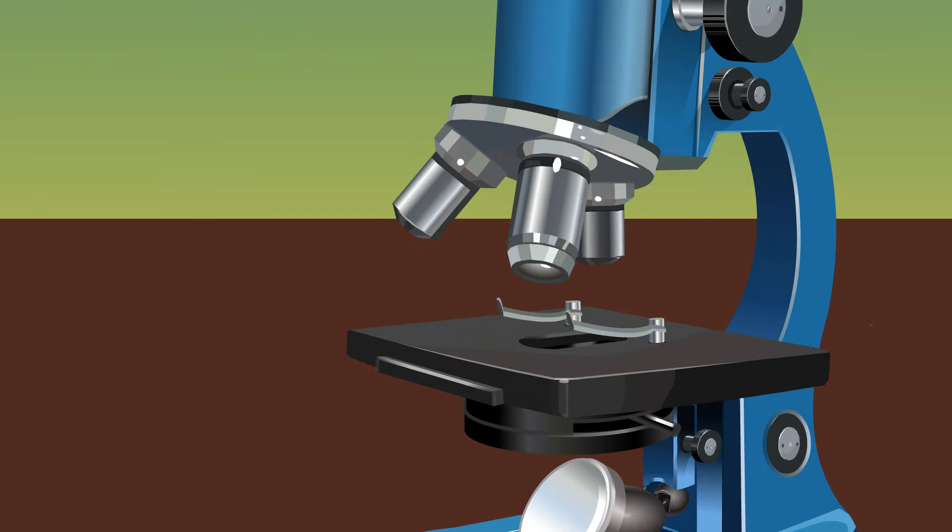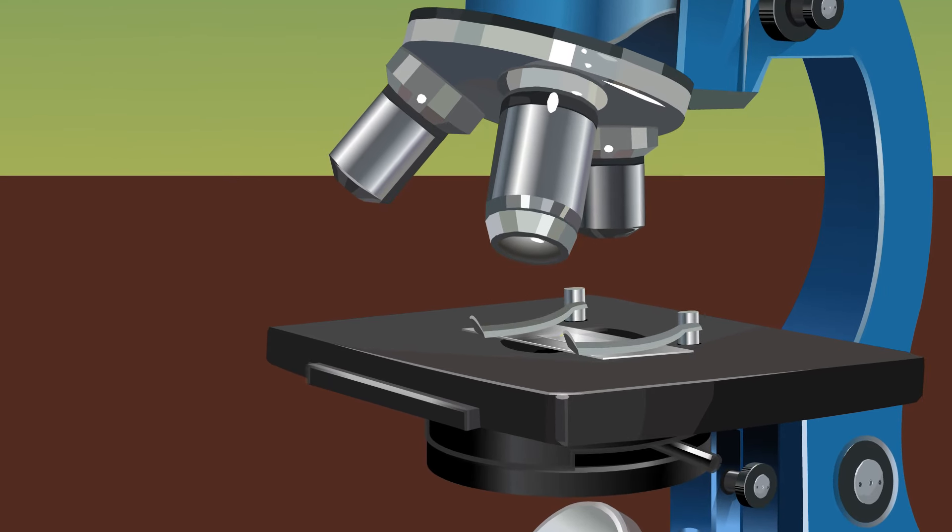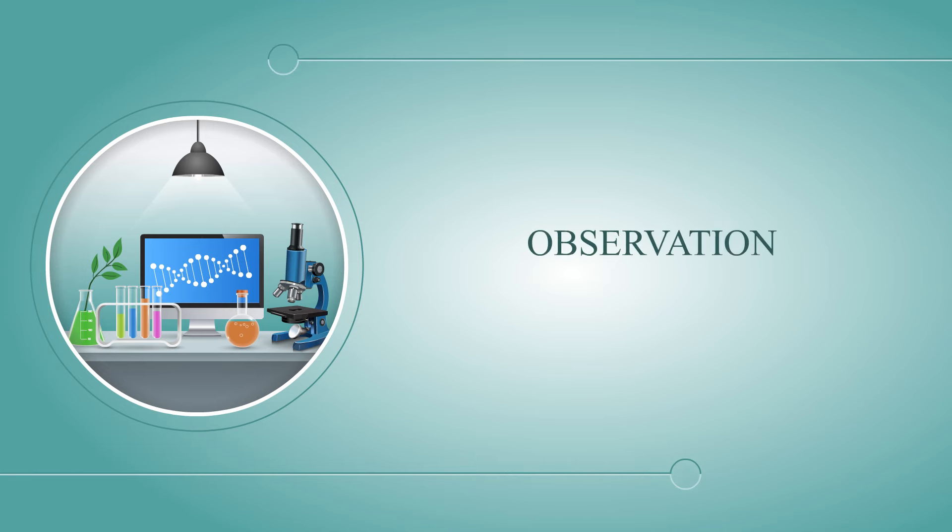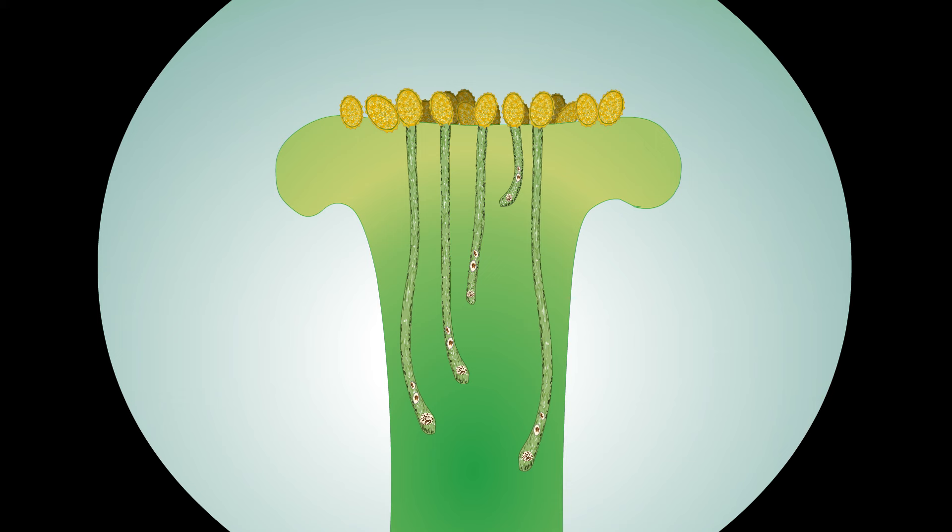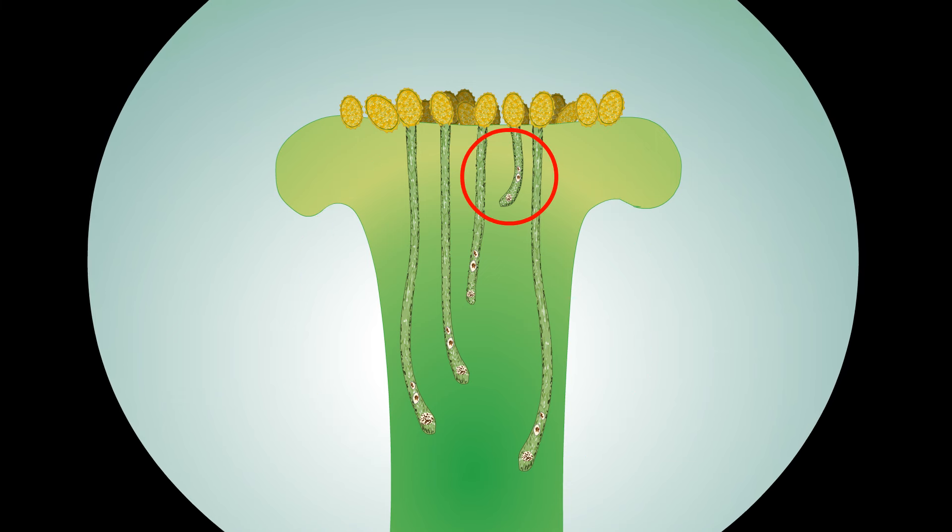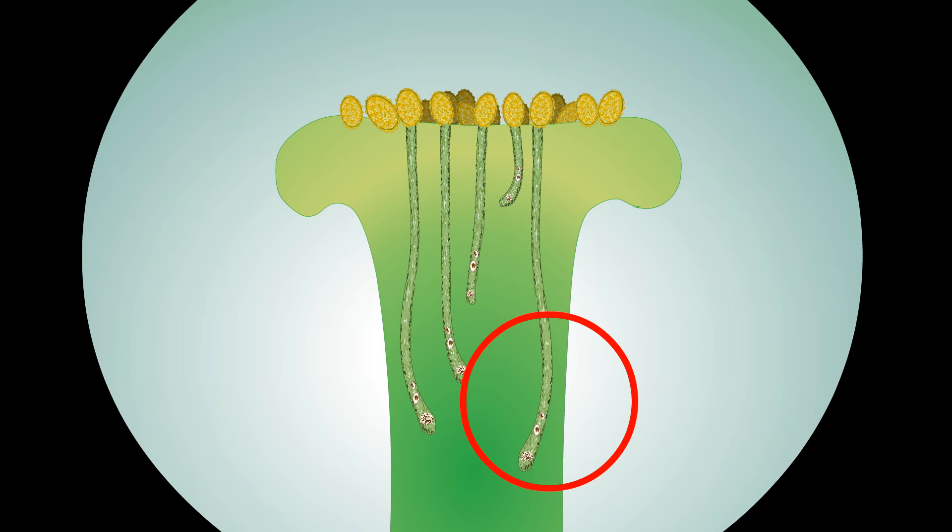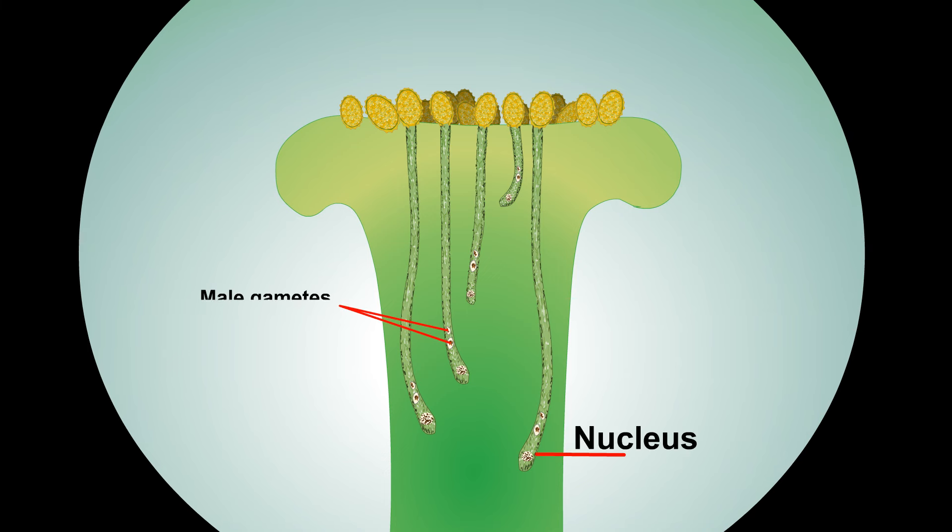Place the slide under the compound microscope and observe the pollen tube growth. Observation: We can observe different stages of germinating pollens traversing through the stigma and style. Some pollens are in early stages of germination while others have a long pollen tube. We can also observe the nucleus and male gametes inside the pollen tube.